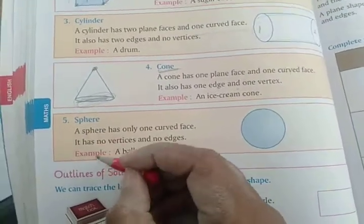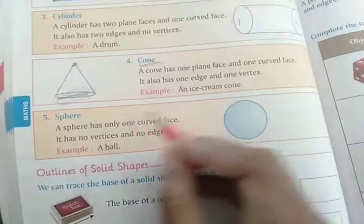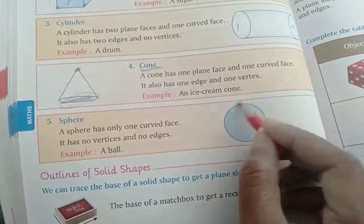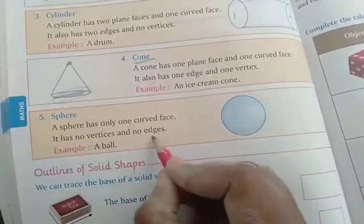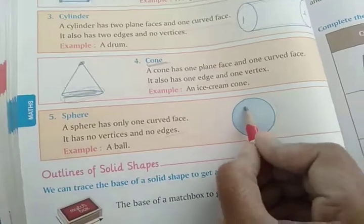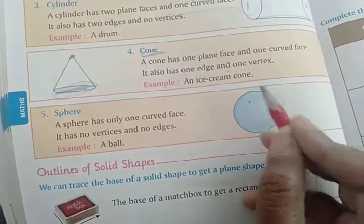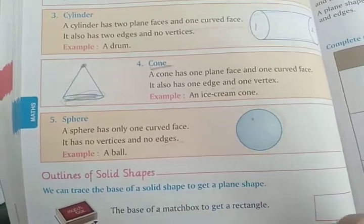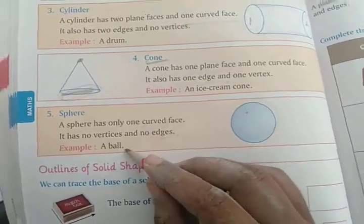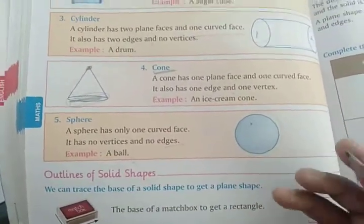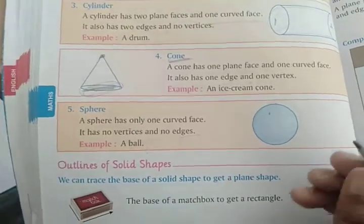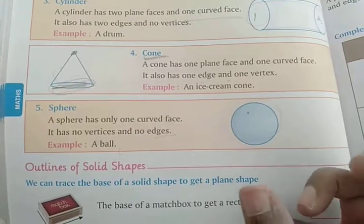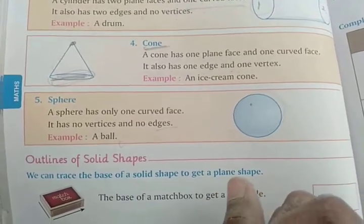Sphere — sphere یعنی round shape ہوتا ہے۔ Sphere has only one curved face, no edges and no vertices۔ اس میں کہیں بھی دو lines joint نہیں ہوتیں، lines ہیں ہی نہیں۔ Ball، tennis ball — وہ سارے sphere shape کے ہیں۔ ہماری زمین بھی sphere shape کی ہے۔